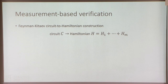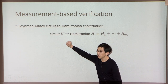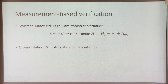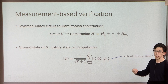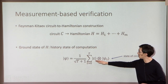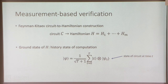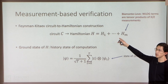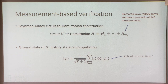The idea uses the Feynman-Kitaev circuit-to-Hamiltonian construction: an efficient mapping from a quantum circuit C to a local Hamiltonian H that encodes the computation. The ground state of H is called the history state — a superposition over all intermediate stages of the computation. If the circuit has size T, the history state superimposes the circuit state at each time step. Crucially, without loss of generality, each Hamiltonian term can be taken to be a tensor product of X and Z measurements.